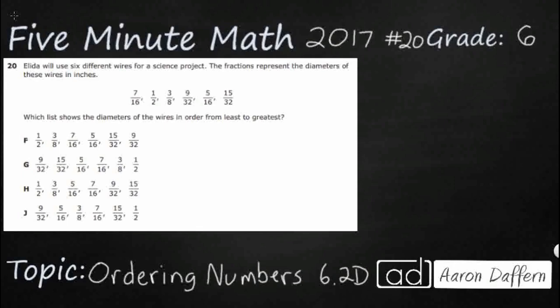Hello, and welcome to 5-Minute Math. Today we are looking at the 6th grade concept of ordering numbers. This is standard 6.2D in the great state of Texas, and we are using item number 20 of the 2017 released star test. If you have not done so already, please go ahead and take a moment to pause the video, work this problem out on your own, unpause it, and then we will look at our answers together.